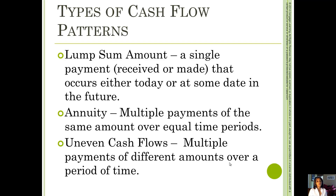An annuity means that there are multiple payments, but a key requirement for it to be an annuity is that they have to be the same amount and over equal time periods. You can think of this as car payments or mortgage payments — some sort of installment loan payment.